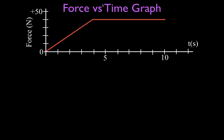Here we have the force versus time graph we're going to use for this video. On the y-axis we have force measured in newtons from 0 to 50 newtons. On the x-axis we have time measured in seconds from 0 to 10 seconds. This red line shows us the force that is applied over time to an object. At time equals 0 the force is 0, then the force increases for the first 4 seconds, and after 4 seconds we have a constant force of 40 newtons.